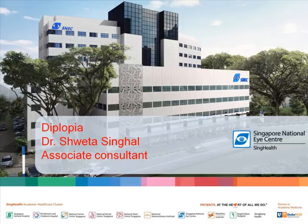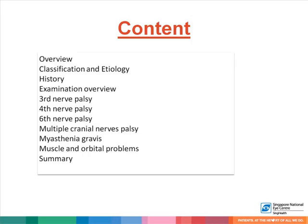Diplopia. This presentation will cover an overview on diplopia, classification and etiology of diplopia, evaluation in terms of history and examination, some examples of third, fourth, and sixth nerve palsies, as well as myasthenia gravis, muscle and orbital problems that result in diplopia, and a summary of the presentation.